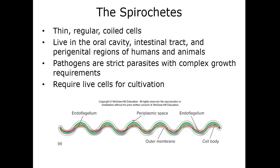We're going to start by talking about the spirochete group. The spirochetes are these really thin, coiled cells with a wavy appearance. They have an endoflagella, meaning the flagella actually runs through the length of the cell. They are typically found in places like the oral cavity, the intestinal tract, and the genital regions of both humans and animals. Mammalian hosts are the typical host pathway. These are pathogens that are strict parasites with complex growth requirements, requiring micro-aerophilic conditions and very enriched laboratory media. They can also be cultivated in live cells in vivo.